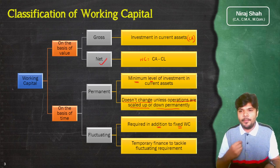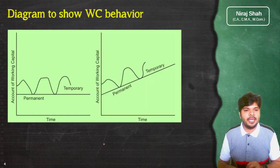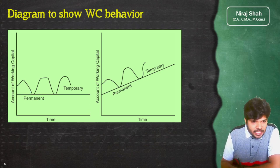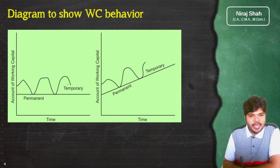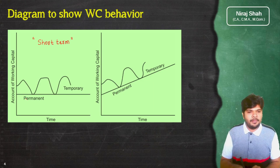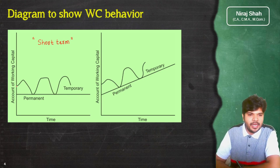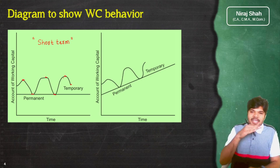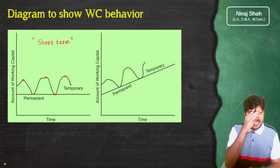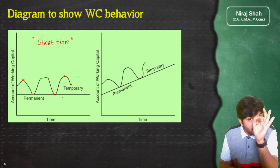Permanent और fluctuating working capital को समझाने के लिए एक diagram देखते हैं। Short term में किसी भी business के अंदर कोई बहुत ज्यादा changes नहीं आते — permanent working capital एक straight line में constant रहती है, जबकि fluctuating working capital की कभी ज्यादा तो कभी कम requirement रहती है, एक cycle की तरह vary होती रहती है।